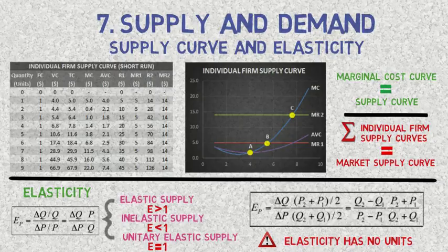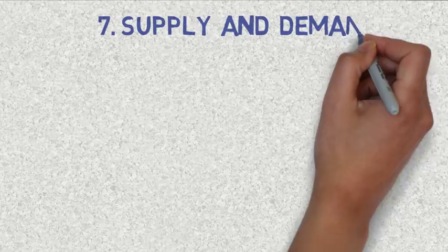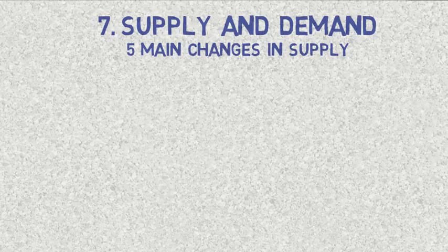It is also possible to measure the cross-price elasticity of supply, which is a measure of the responsiveness of the quantity supplied of a good to changes in the price of a related good. The terms supply and quantity supplied refer to two different things — a change in the quantity supplied corresponds to a change in the quantity of a good placed on the market due to a change in price, meaning there is a movement along the supply curve.